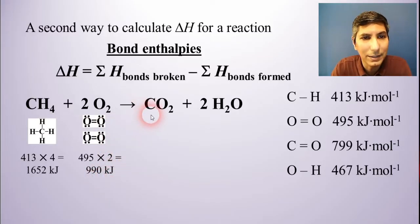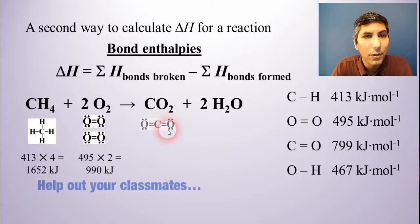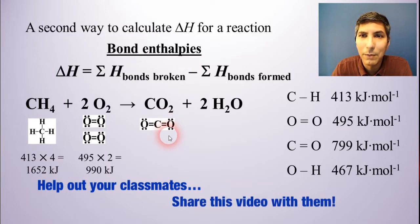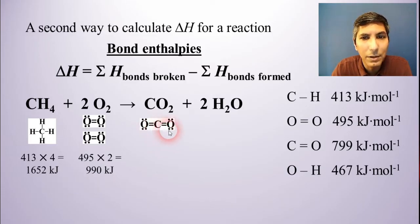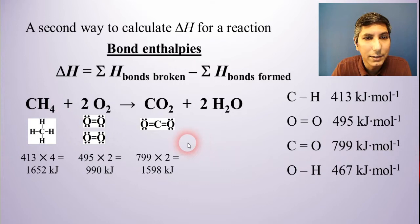Next, I have the carbon dioxide. Hopefully, you'll remember that the Lewis electron-dot diagram for carbon dioxide looks something like this. And we have two of these carbon-oxygen double bonds. And those have a bond enthalpy of 799 kilojoules per mole. So since we have two of those, I'm going to multiply it by 2, and I get 1,598 kilojoules.